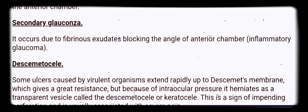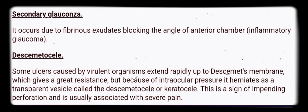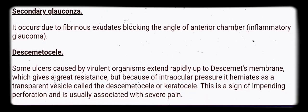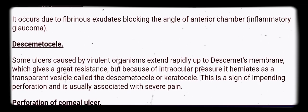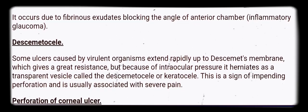Secondary glaucoma occurs due to fibrinous exudates blocking the angle of the anterior chamber, causing inflammatory glaucoma.